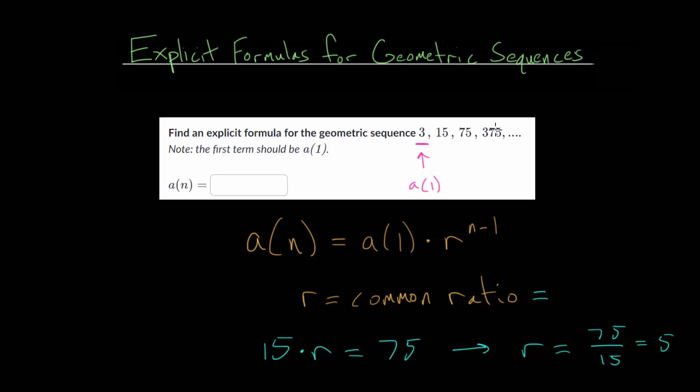But we could have done that for any of the two terms. So for instance, we could have chosen 375, and we just divide by the one before that, which is 75. And 75 goes into 375 five times. Now, a general piece of advice is that it's usually easier to find the common ratio with the smaller numbers. For instance, we could have taken 15 and just divided it by 3, and that would also equal 5.